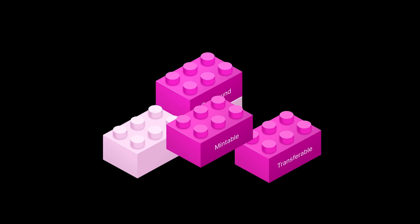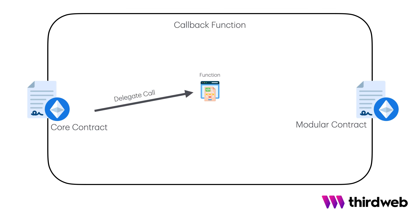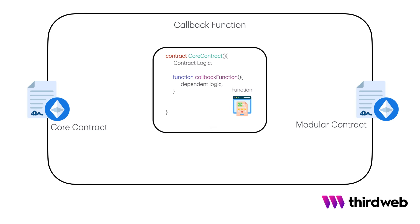So how can a modular contract provide additional functionality to a core contract? When you install a module on top of a core contract, the module provides the core contract with callback and fallback functions. These functions can be used through delegate calls on the core contract. The fallback functions are independent functions that can be called from the core contract, and the callback functions are dependent functions that must be used within the context of the core contract. The callback functions enhance the existing functionality of the core contract by adding new logic to their existing functions, executing additional logic before or after the core contract logic.